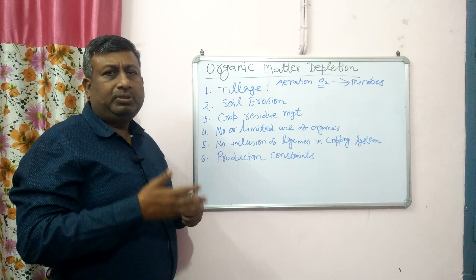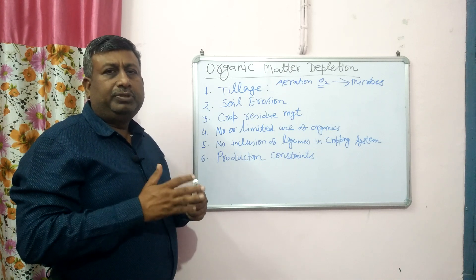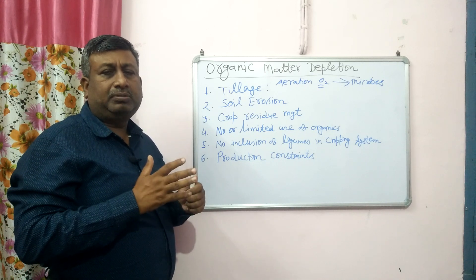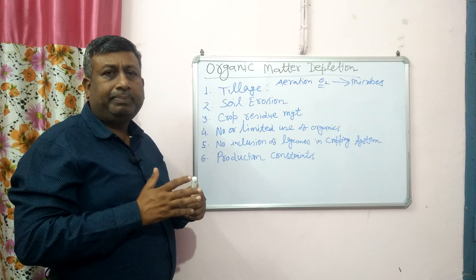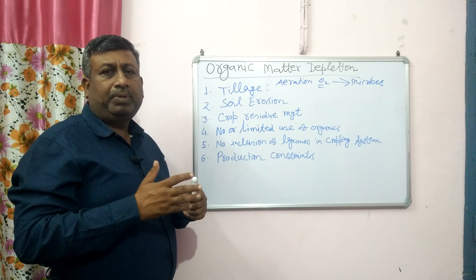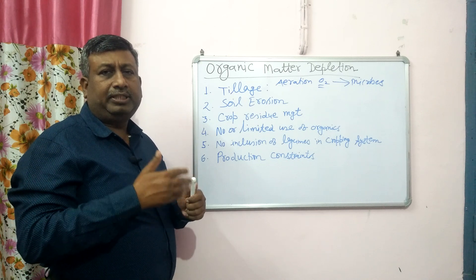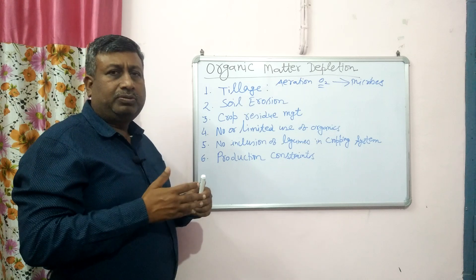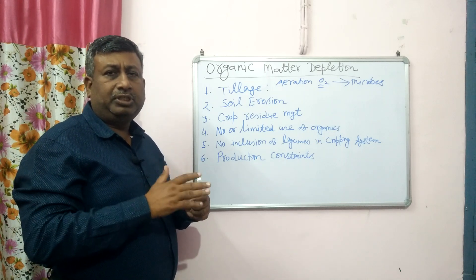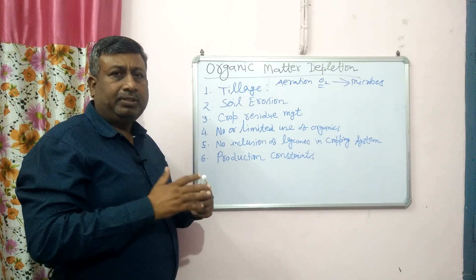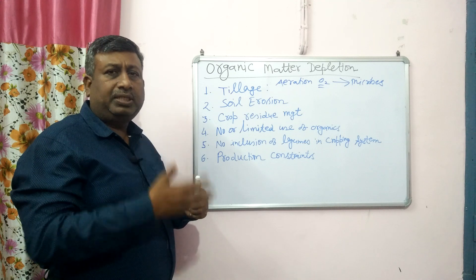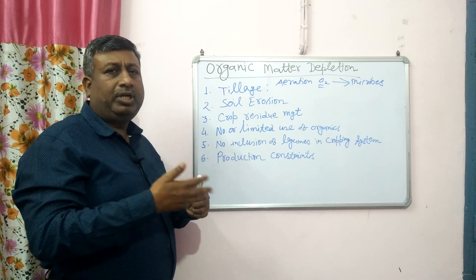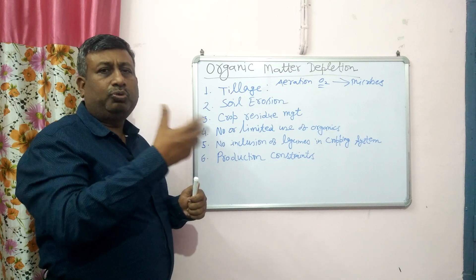We should go for optimum and minimum tillage. Minimum tillage is a very good concept which maintains the nutrient supply as well as seedbed preparation and organic matter content. So minimum tillage is very good. Excessive tillage always reduces organic matter. Farmers who do more tillage in the field will find that the organic matter is consumed by microbes and becomes CO₂.